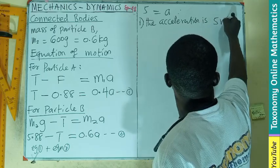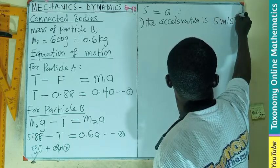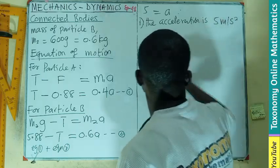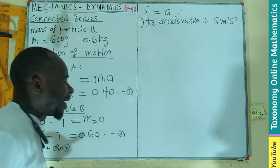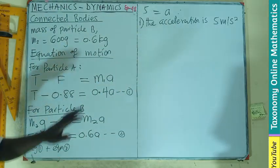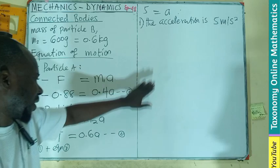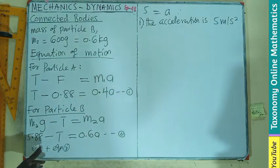That means the acceleration is going to be 5 meters per second squared. So we can conclude that the acceleration is going to be 5 meters per second squared.